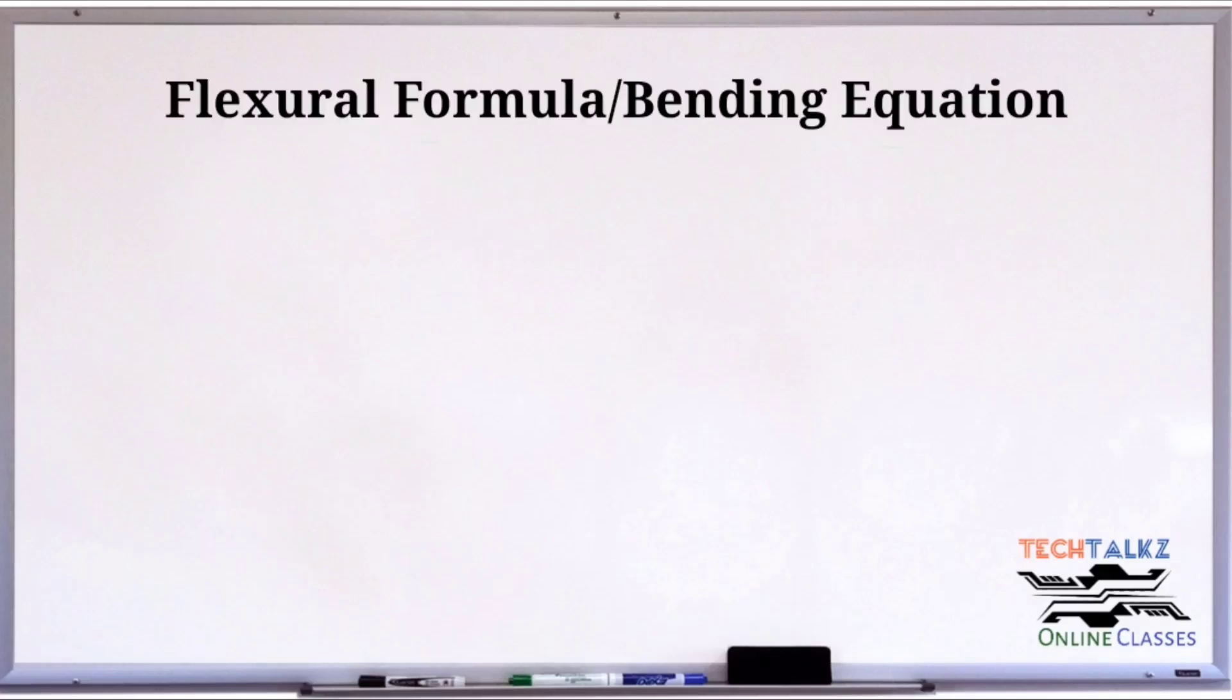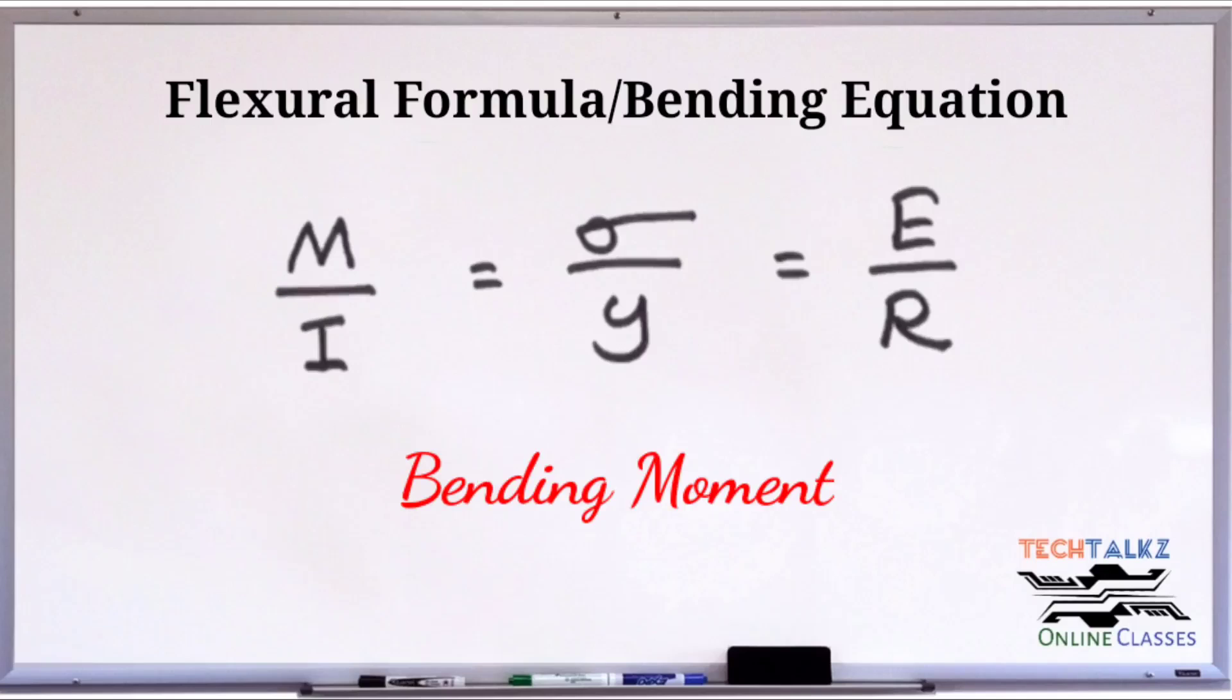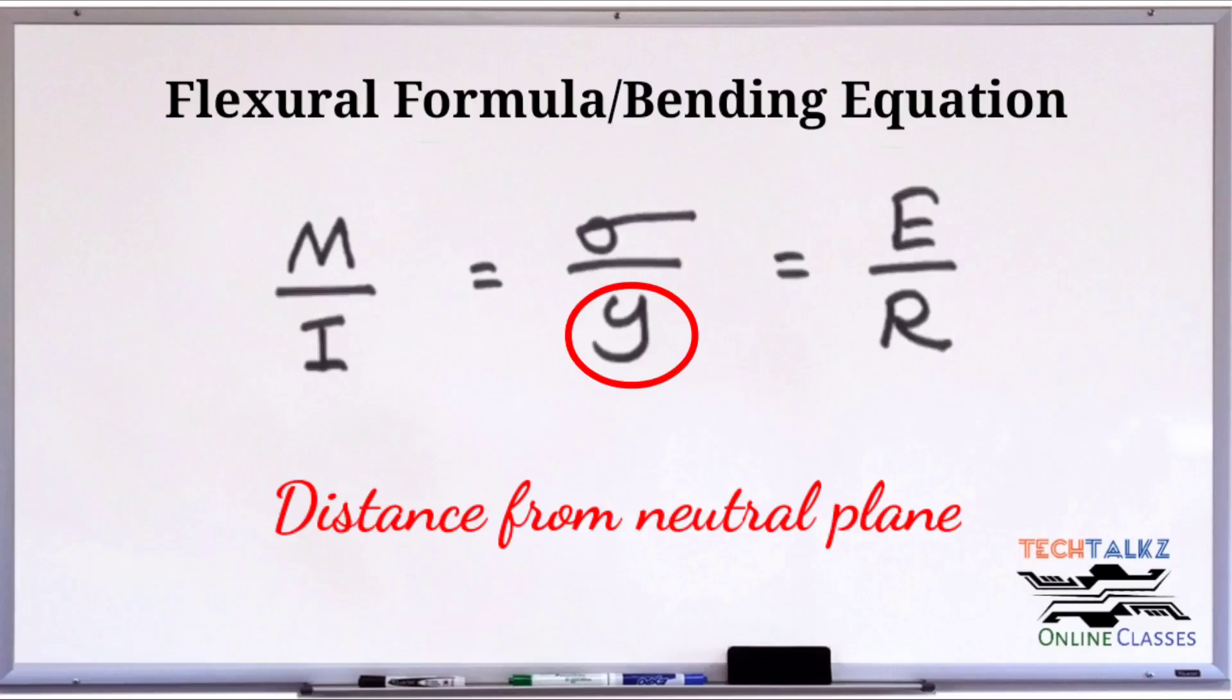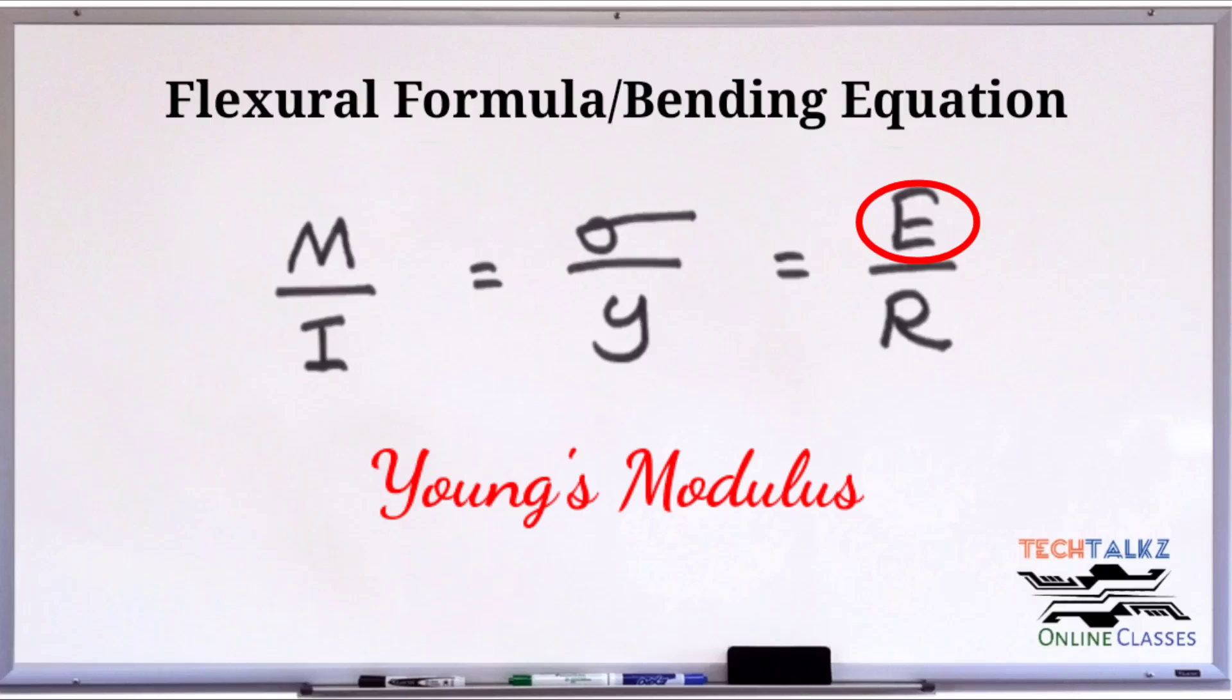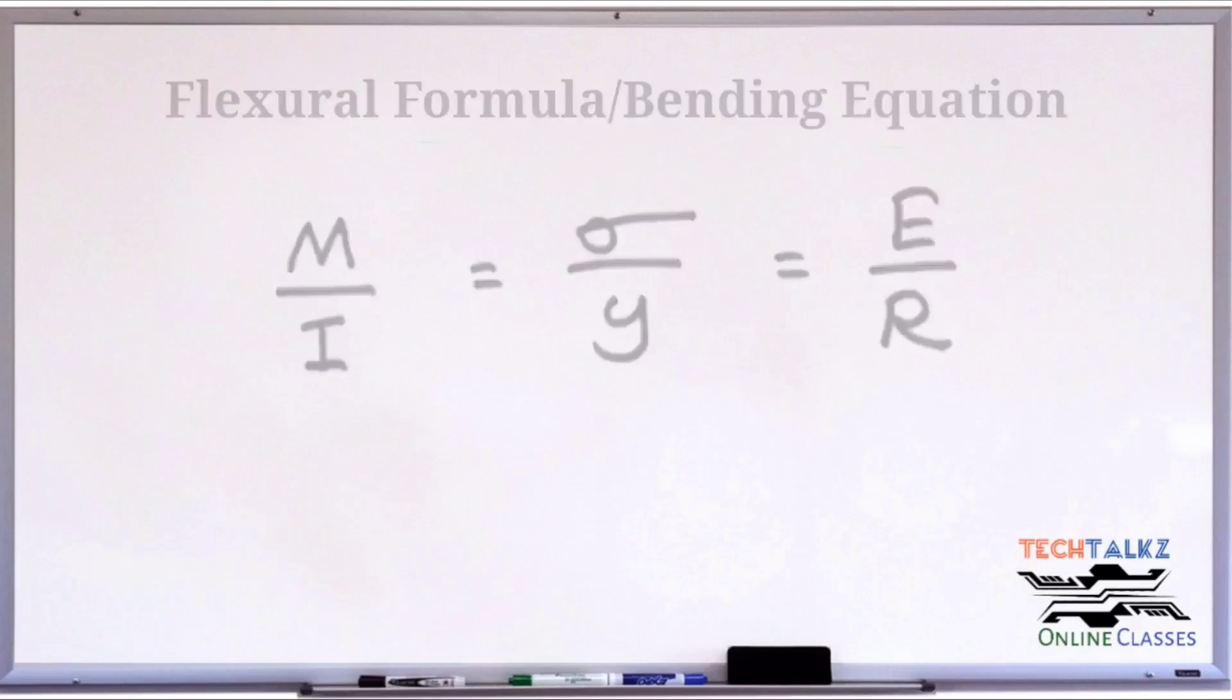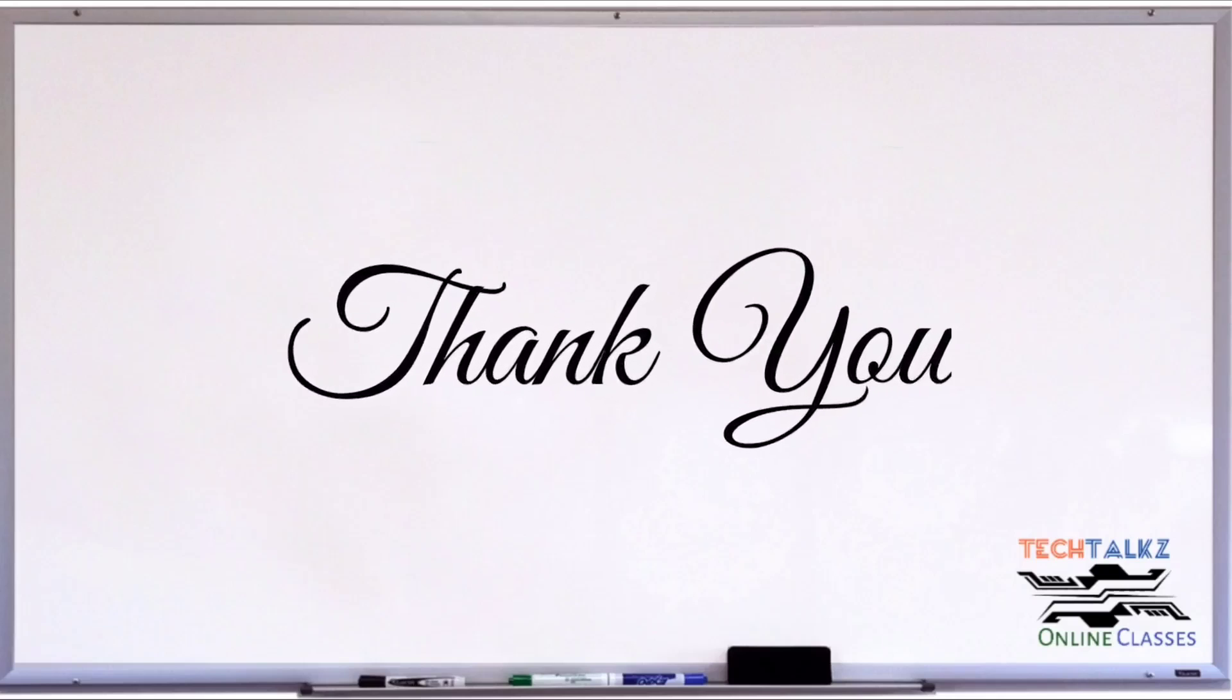This equation is known as flexural formula or bending formula or bending equation. M/I = σB/y = E/R, where capital M is bending moment, capital I is moment of inertia or second moment of area, σB is bending stress, and small y is distance from the neutral plane, and capital E is Young's modulus, and capital R is radius of curvature. In this case, we have the derivation in the next class.